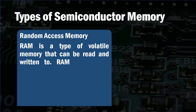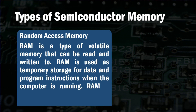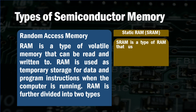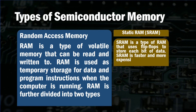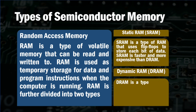Here are the main types of semiconductor memories. The first one is random access memory, that is RAM. RAM is a type of volatile memory that can be read and written to. RAM is used as temporary storage for data and program instructions when the computer is running.